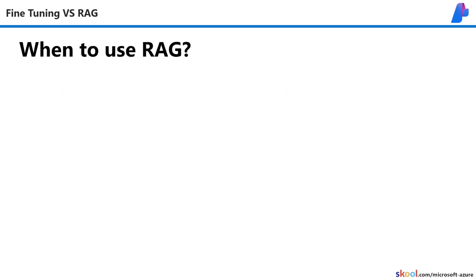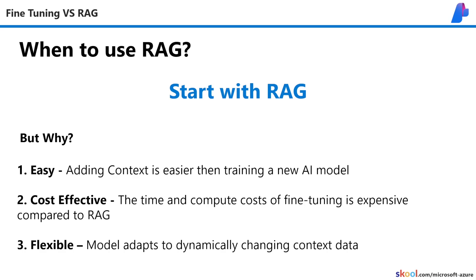All that said, when should we use RAG? Generally, you should always start with RAG. It's because it's easier, cheaper, and more flexible to start with. Building AI apps like anything requires many iterations of improvement, and fine-tuning has so much involved that it's not wise to start there without at least trying to see if prompt engineering and RAG can be enough for your use case.